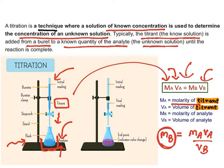The basic purpose of titration is to find out the concentration of the analyte. The end point is determined by using an indicator. The indicator gives a color change when neutralization takes place.